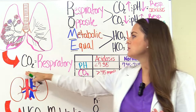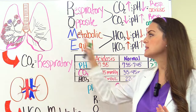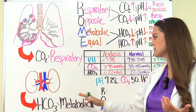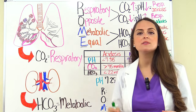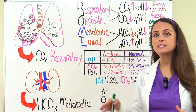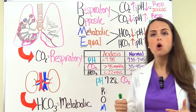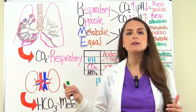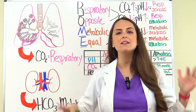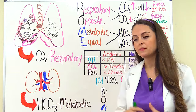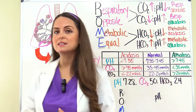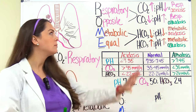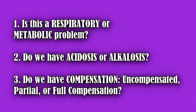CO2 represents the respiratory system and HCO3 represents the metabolic system. When blood pH decreases too much causing acidosis, or increases too much causing alkalosis, these two systems will try to balance that blood pH back to normal. Whenever you are solving these arterial blood gas problems, there are three things you want to ask yourself along with applying your method.